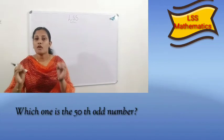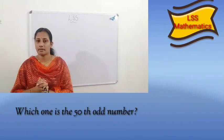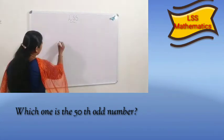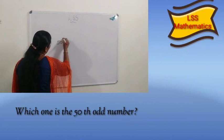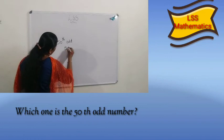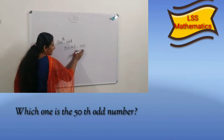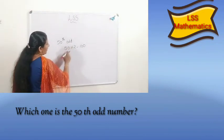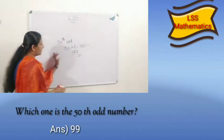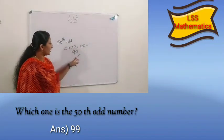Next, which one is the 15th odd number? How do we find odd numbers? Here we want to find the 15th odd number. Very easy — 15 multiplied by 2 is 30. Wait, that gives the even number. The 15th even number is 30, so the 15th odd number is minus 1. So, 29 is the 15th odd number.